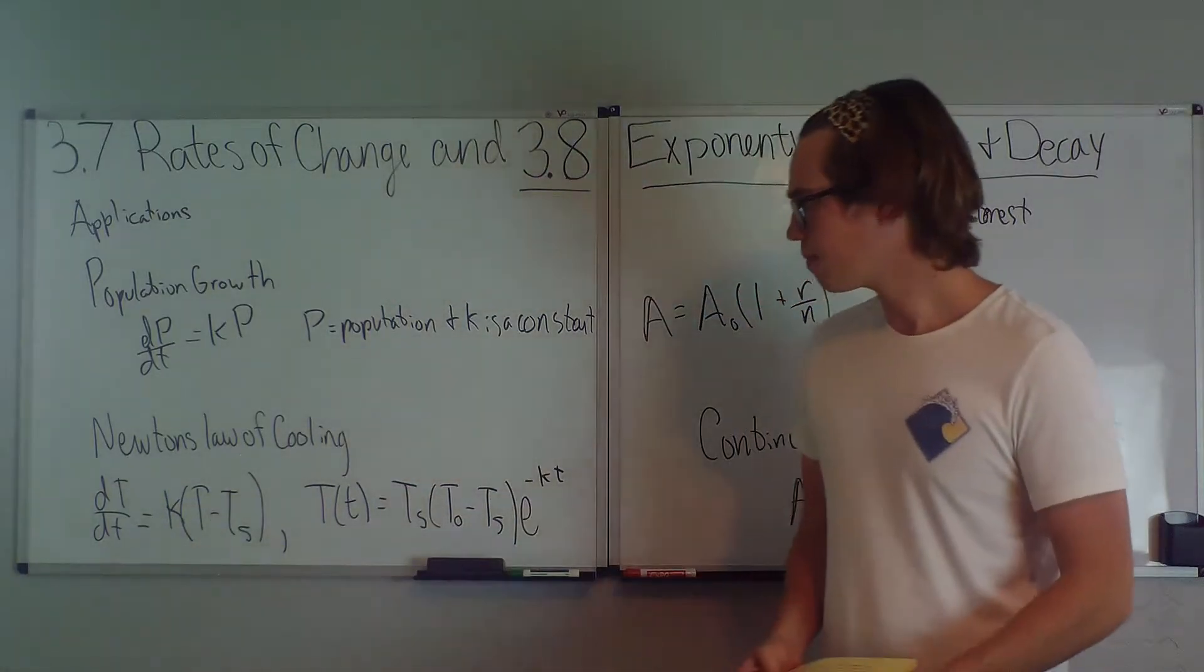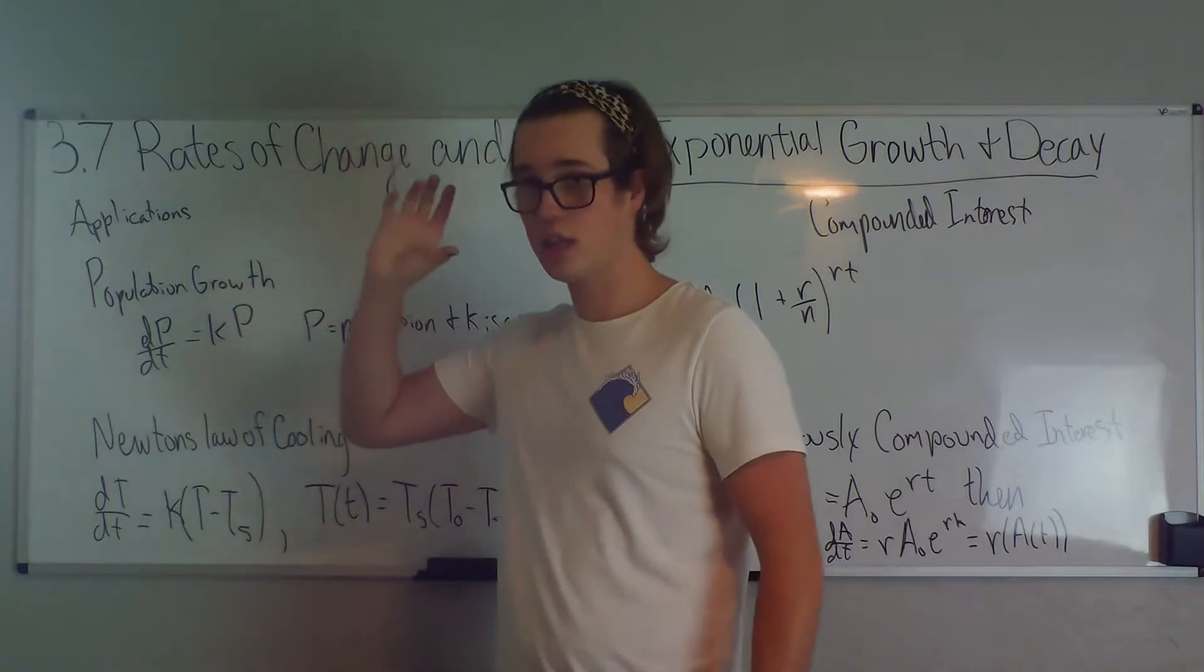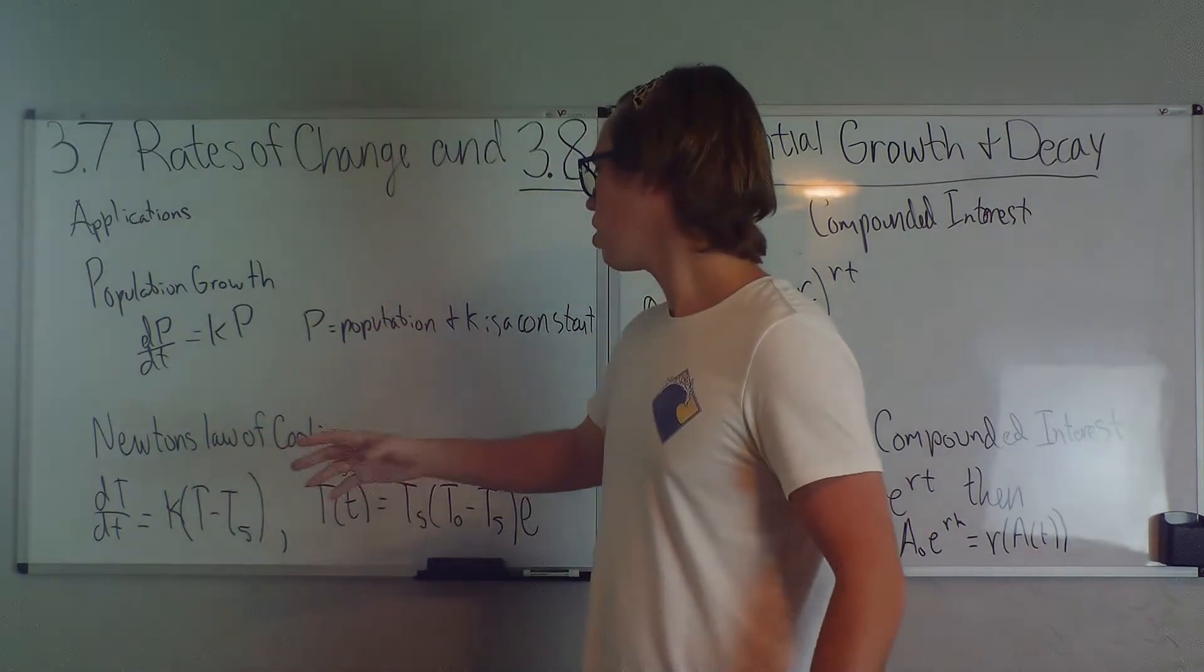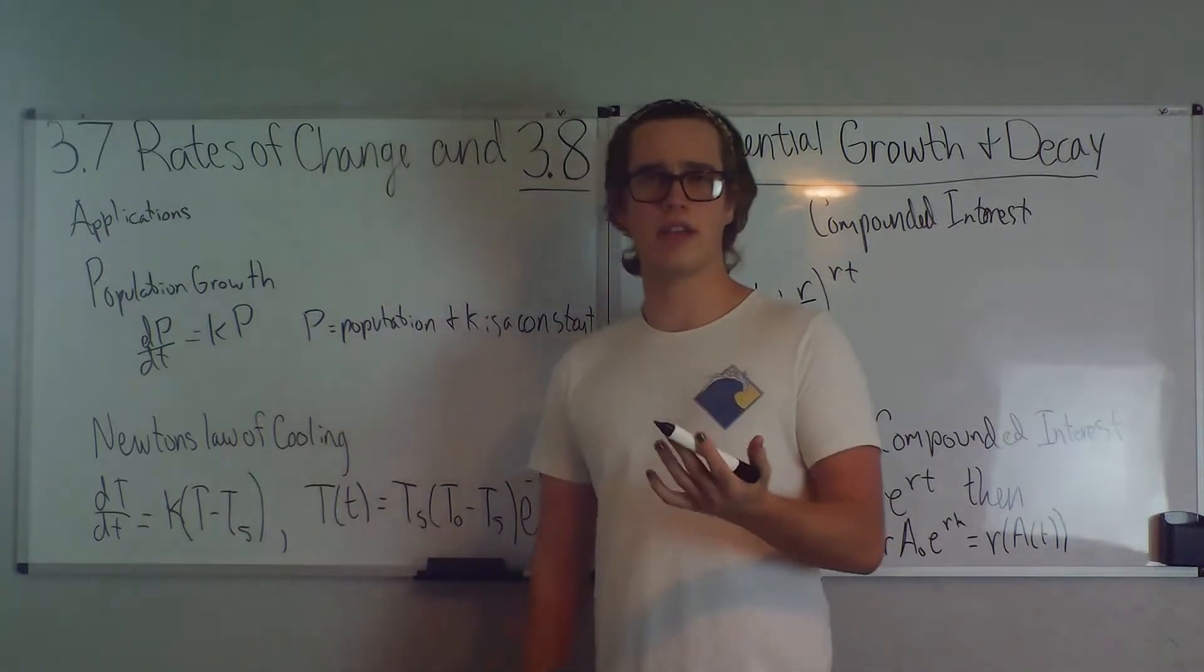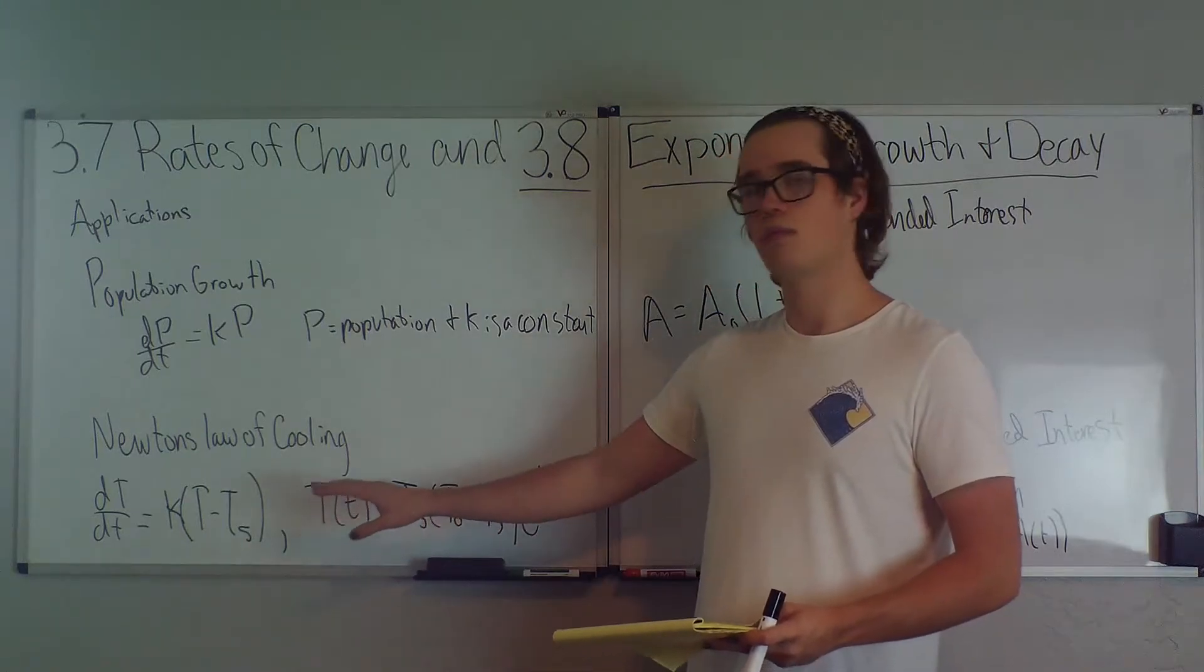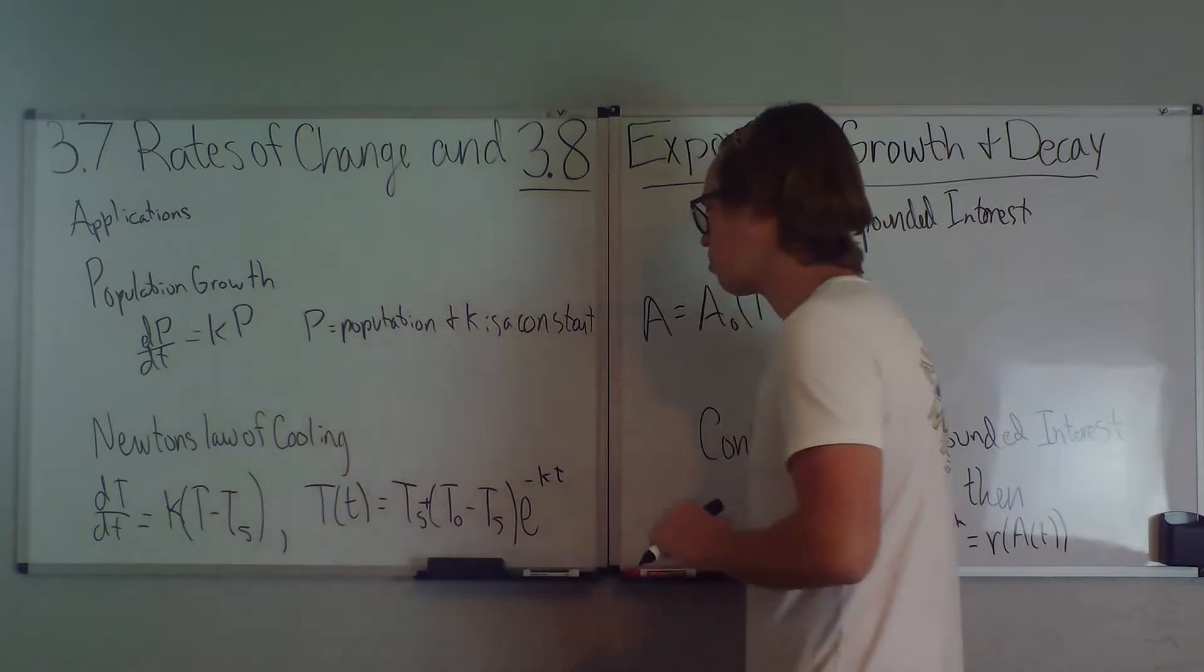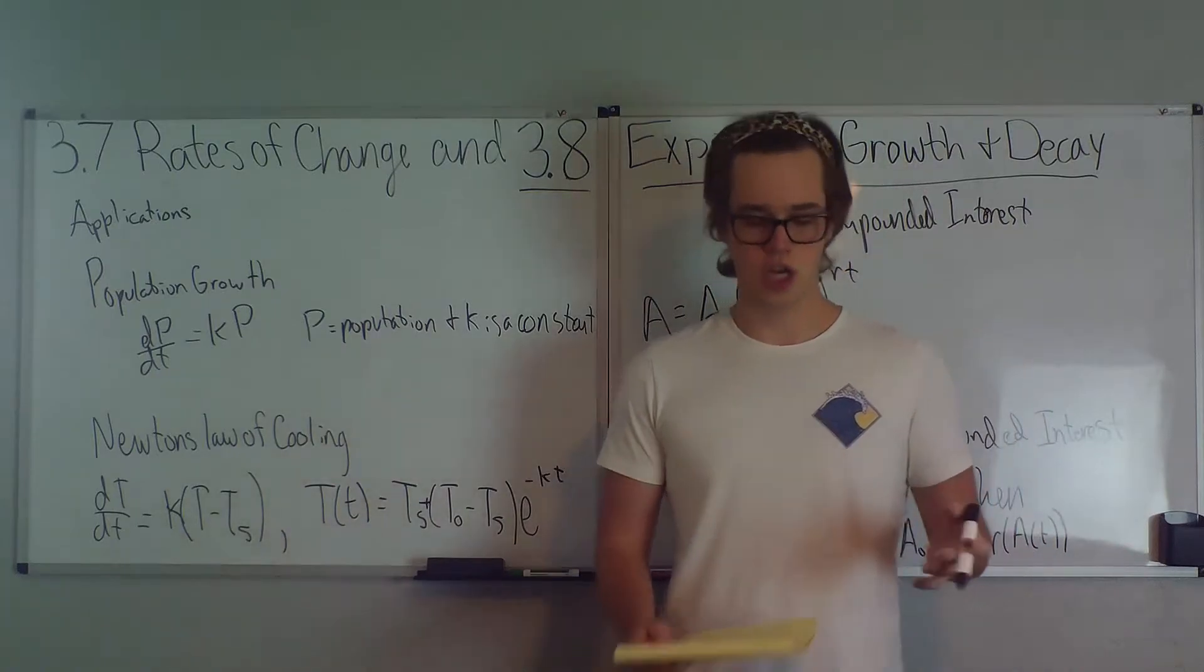And then we have Newton's law of cooling, and that's d big T, dt, which is the change in temperature over the change in time. So d big T over dt is equal to k times T minus Ts. Well, what is Ts? Ts is the surrounding temperature in a room. And from that we get this equation that says temperature of time, big T of small t, is equal to Ts plus T naught minus Ts, surrounding temperature, times e to the negative kt. And that is how temperature changes in a room.